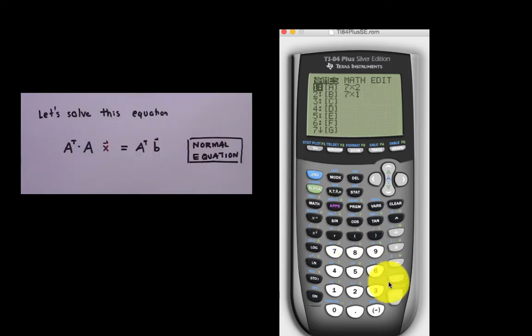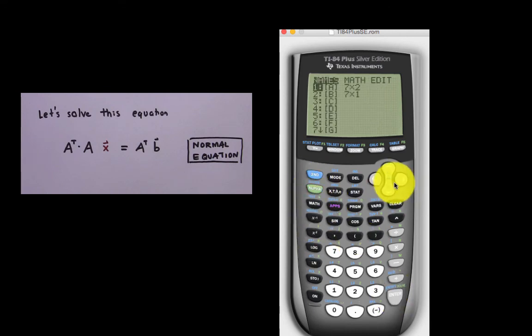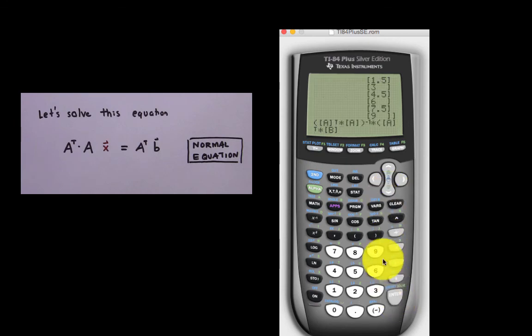To solve the normal equation, we form matrix A transpose times A, take its inverse, and then multiply by A transpose times B, and this produces the matrix X, known as the least squares solution.